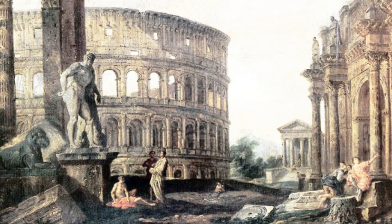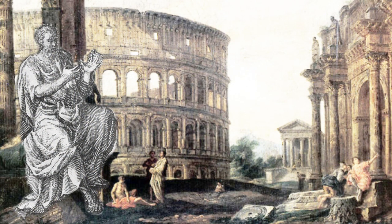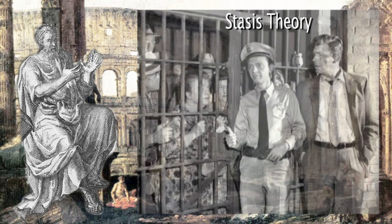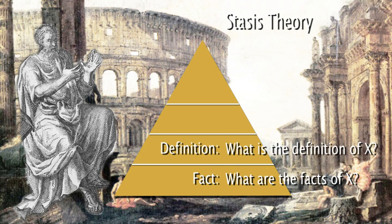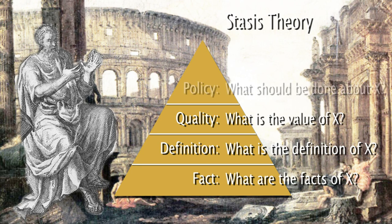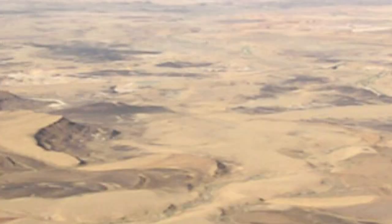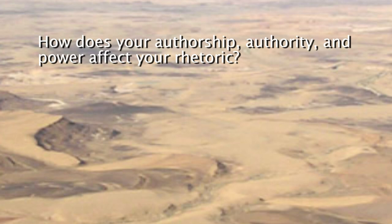Later in Rome, an awesome public figure named Quintilian came along, and some of his ideas would later be called stasis theory — by later, I mean several hundred years. The stasis theory model is used quite often in law. The stasis theory model can also be represented as a triangle, this time with four tiers. Each one, from the bottom up, must be completed for a truly persuasive argument. The bottom tier is fact: what are the facts of X? The second is definition: what is the definition of X? The third is quality: what is the value of X? The last is policy: what should be done about X? Question: how does your authorship, authority, and power affect your rhetoric? Think about it.